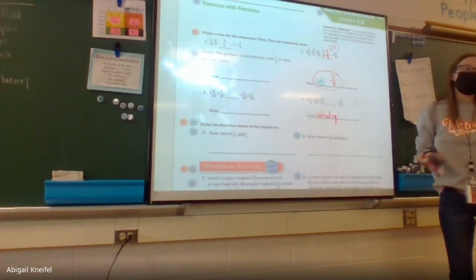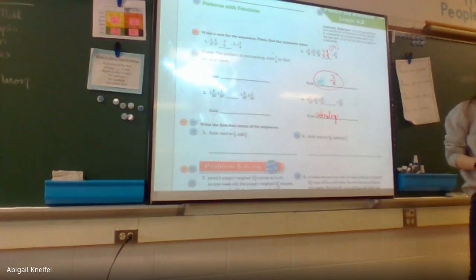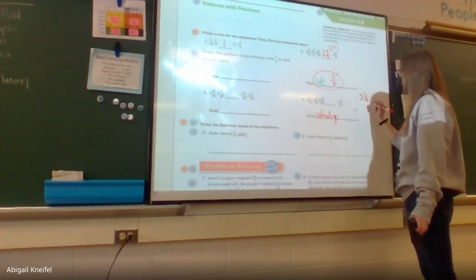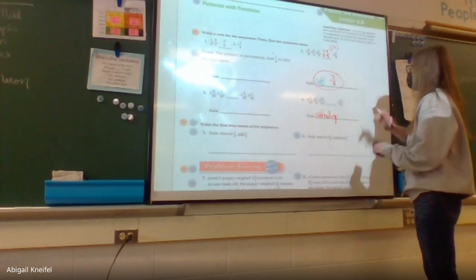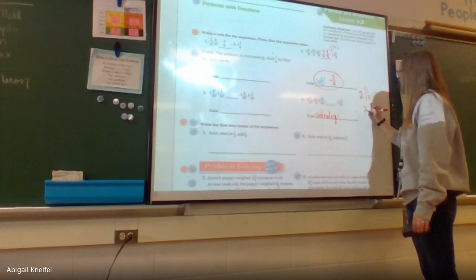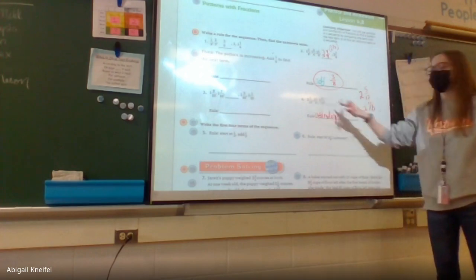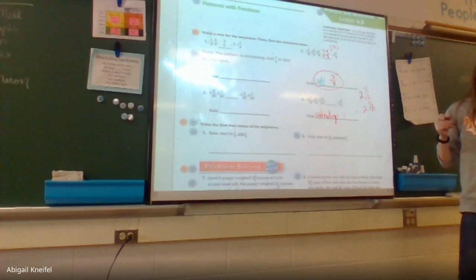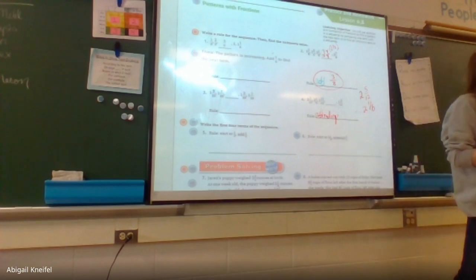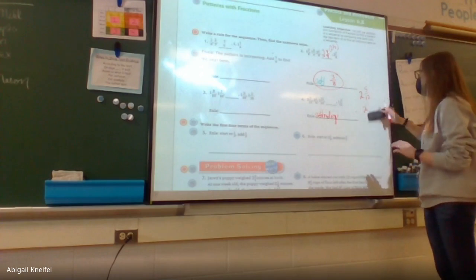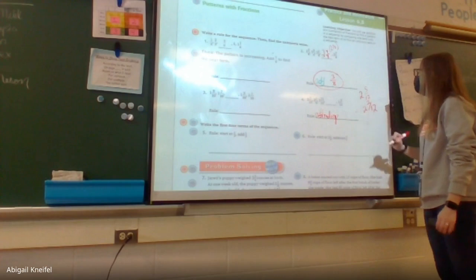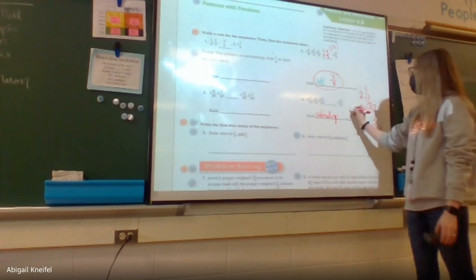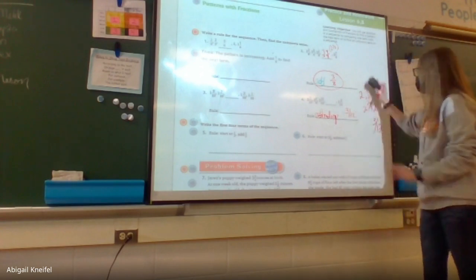I should say 'terms' not 'digits.' I take the first two terms and subtract them to find the difference. The bigger one needs to be on top. Can I subtract right now? No — I need a least common denominator. Between twelve and six, it's twelve. I change six to twelve; one becomes two. Five minus two is three; two minus two is zero. So I'm subtracting three twelfths from each term.